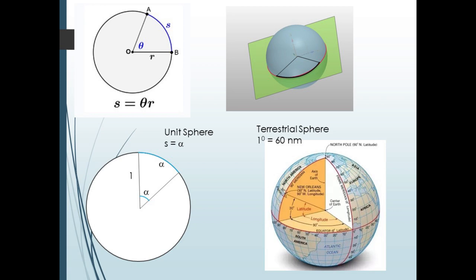When we use the terrestrial sphere as a model, we will typically use degrees, or degrees-minutes-seconds to measure our angles. The length of each spherical side is easy to compute using nautical miles for length, because one degree of arc equals 60 nautical miles, or one nautical mile equals one minute of arc.